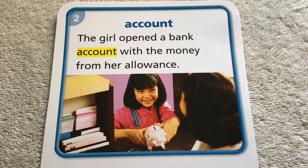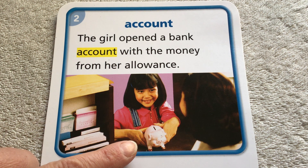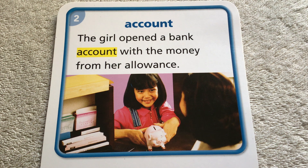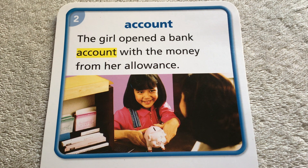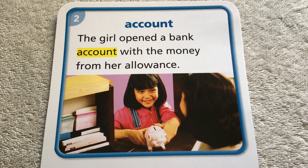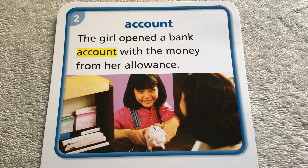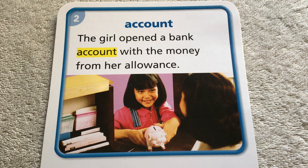Another vocabulary word for this story is the word account. The girl opened a bank account with the money from her allowance, and you can see she's holding out her piggy bank to the bank teller. When you have an account with the bank, it means you take your money to the bank and you leave it there. So you leave your actual money at the bank and they keep it safe for you. And then you take out that money when you need it. So having an account means you take your money to the bank, and then you take it back out of the bank little by little as you need it.